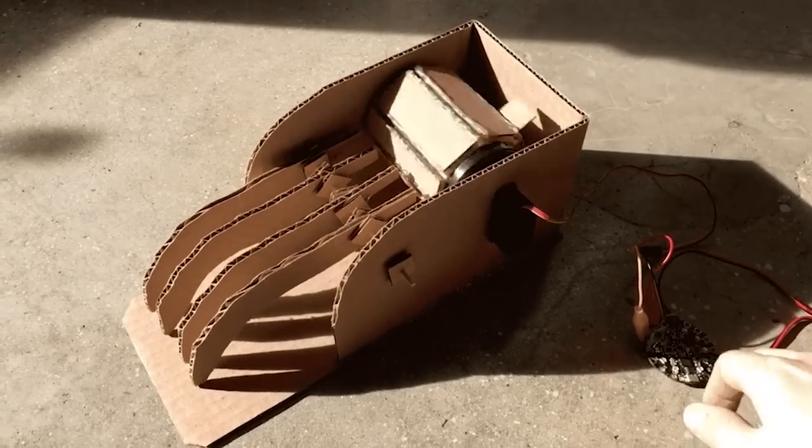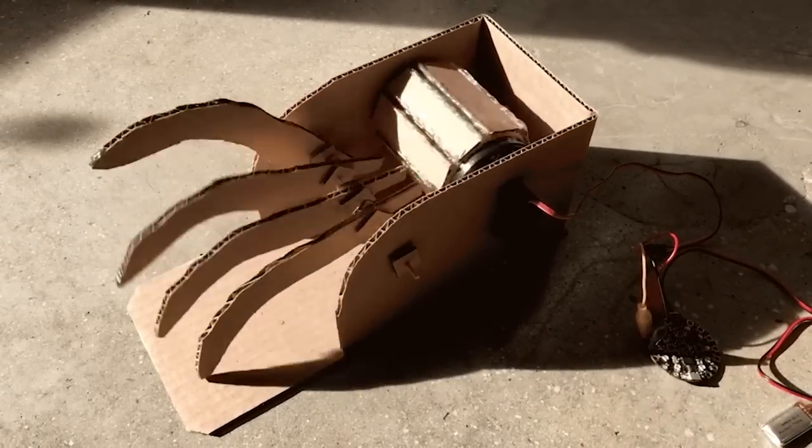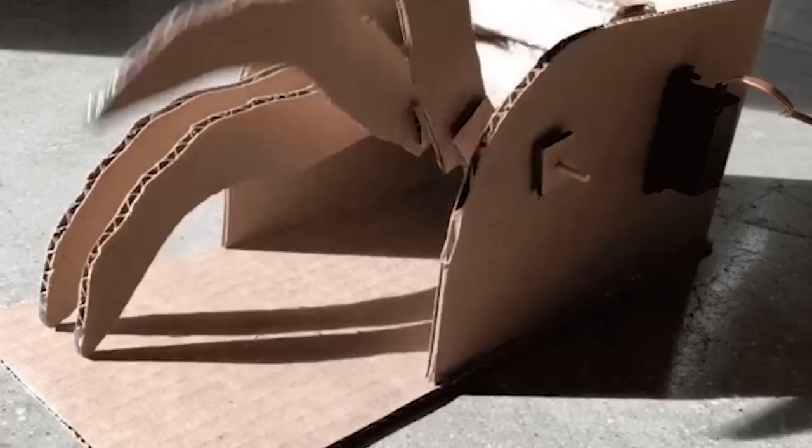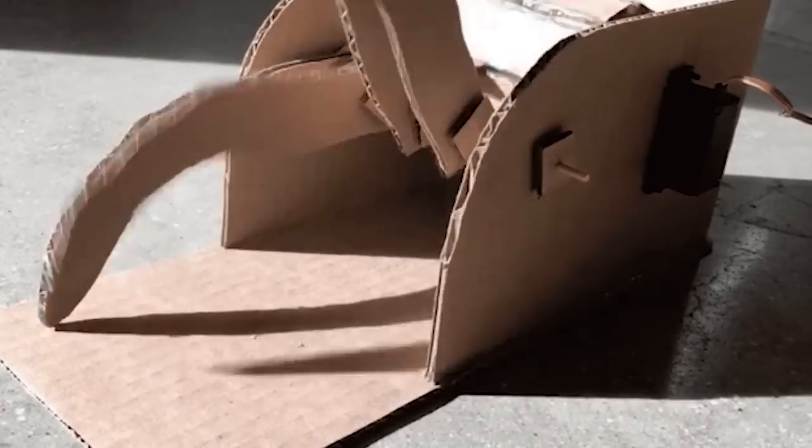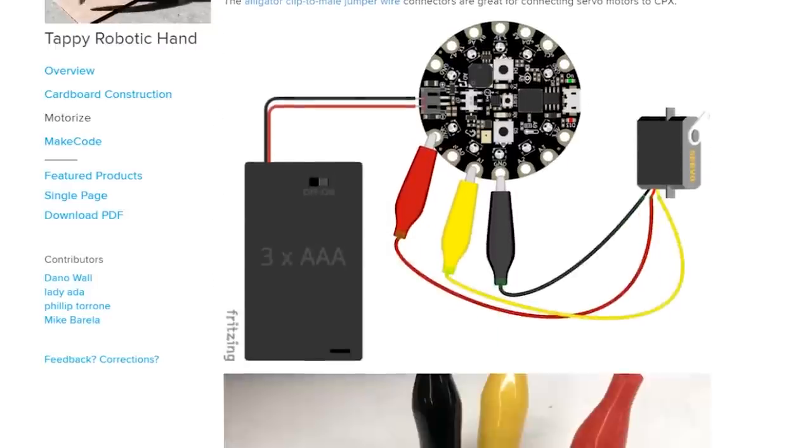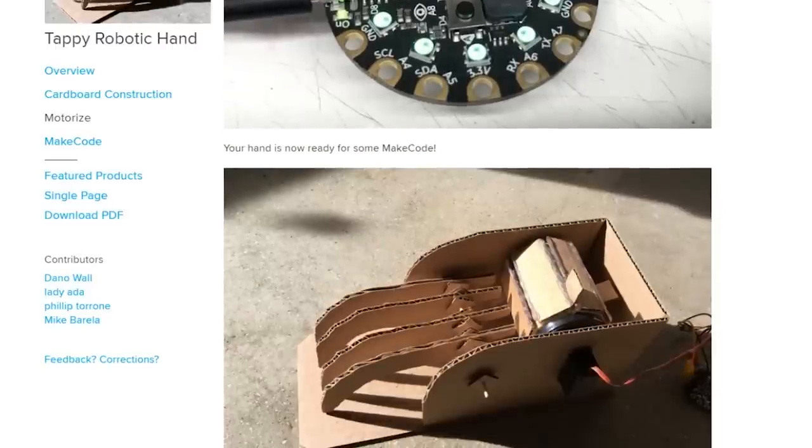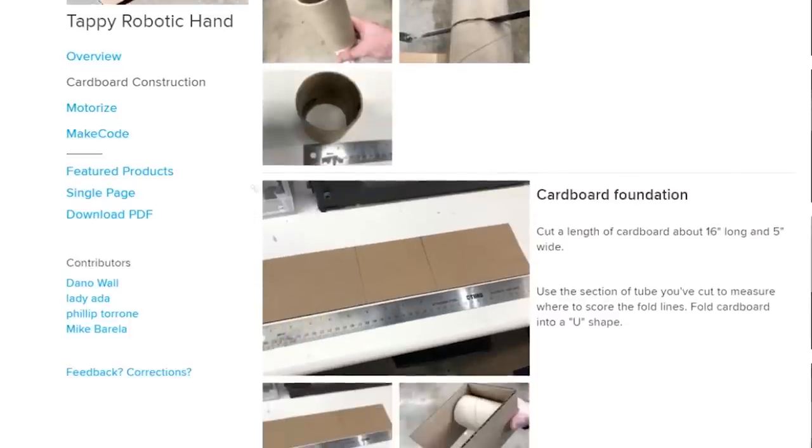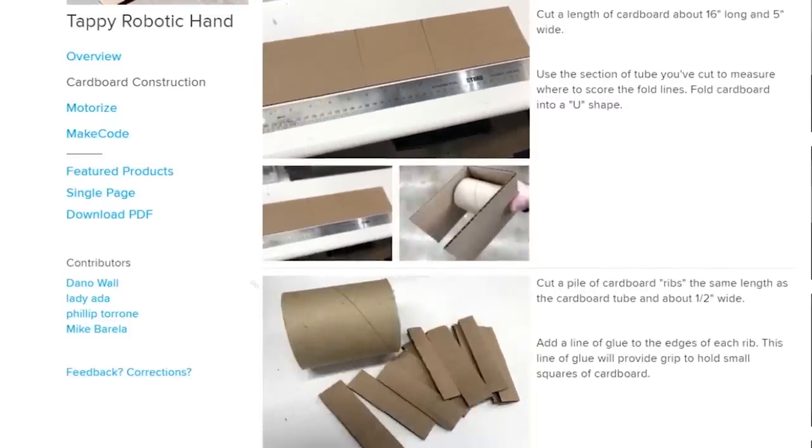And now for more Adafruit projects, rapid fire! Dana Wall posted this simple but awesome guide on making this motorized cardboard hand that drums its fingers. For the electronics, it's basically a Circuit Playground Express and a continuous rotation servo, but you can also make it portable with a battery pack. The rest of it is just cardboard, hot glue, and a wooden skewer.